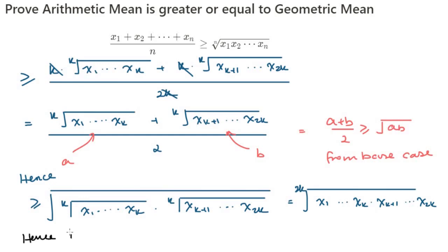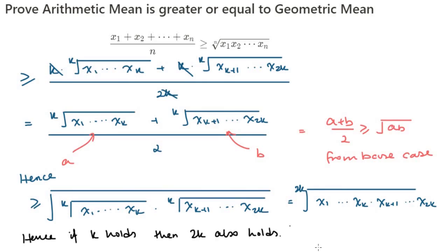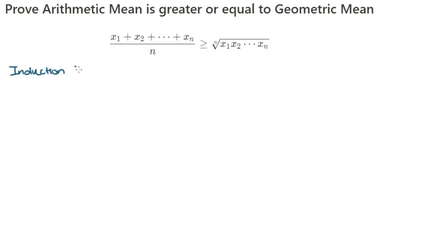Therefore, if n equals k is true, then n equals 2k is also true. That was the forward step of our induction.